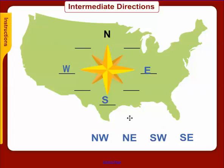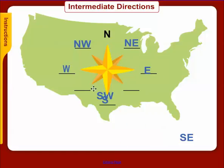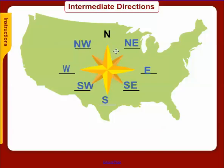We also have intermediate directions — intermediate means in-between. North-west is in-between north and west, north-east is in-between north and east, south-west is in-between south and west, and south-east is in-between south and east. Notice that all intermediate directions either start with north or south — so you don't have an east-south or a west-north. They always start with either north or south.